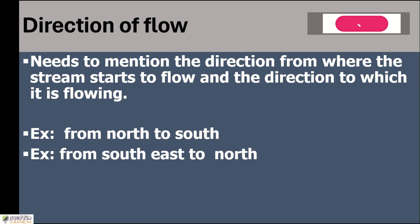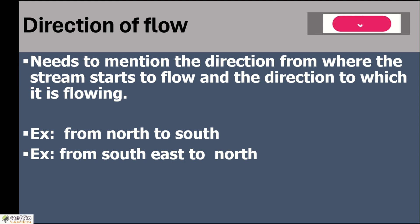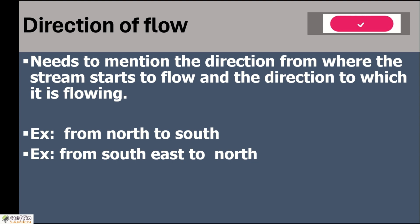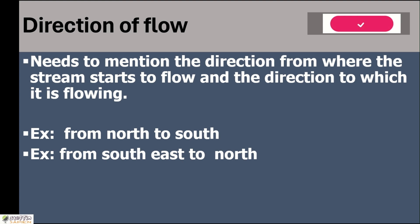When we write the direction of compass for different places, we don't need to mention both. But here, when we write the flow of rivers, we have to mention both the direction from where the flow is starting and the direction to which it is flowing. So we have to be a little careful and keep this in mind while answering.